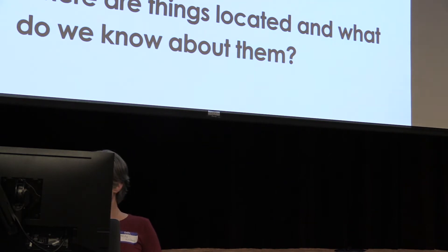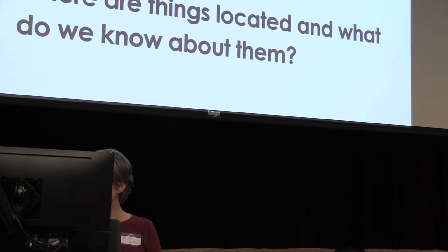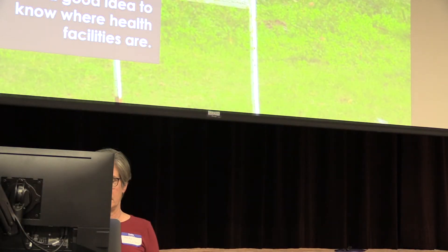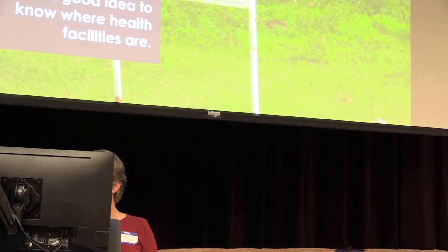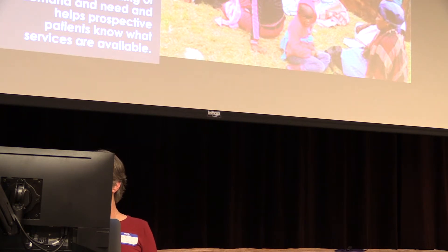For this presentation, we're going to focus on one specific type of spatial data set: point location data that helps us understand where things such as schools and health facilities or other sites of interest are, so they can be linked to attributes that are known about the site. Let's start with a basic assumption: when you're trying to make decisions about how to treat people effectively, it's helpful to know where the health facilities are.